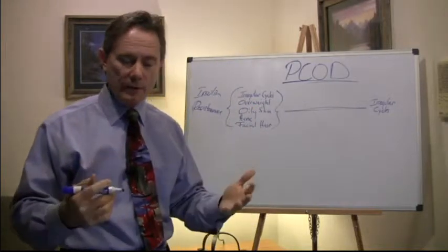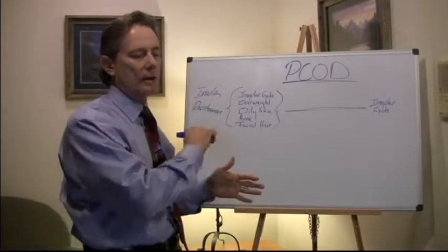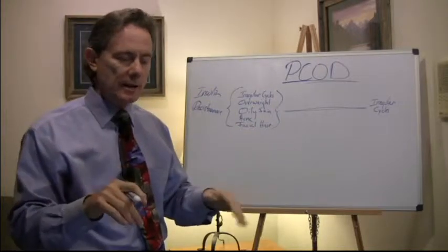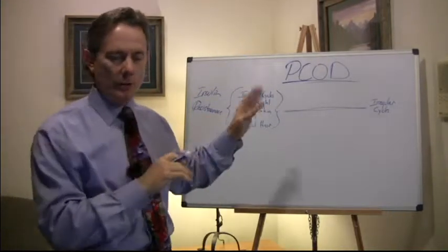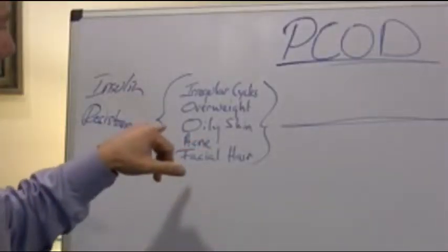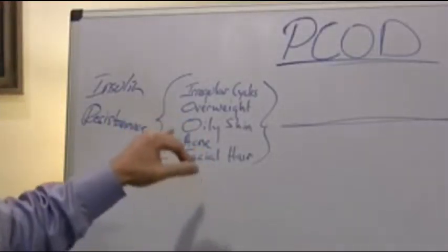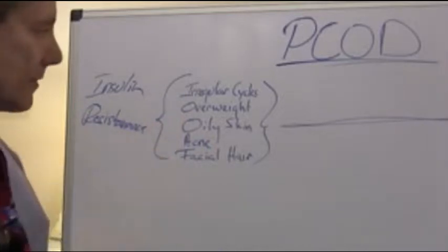So when they don't ovulate, then they're not going through a normal cycle, and as a result of that, they start to have a little bit more progesterone than estrogen, and so they will then start to have acne, oily skin, and some facial hair.